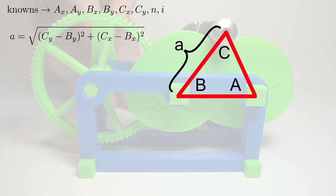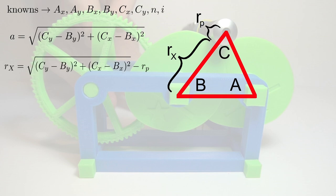But we're not really trying to find a, what we're really trying to find is the radius of the cam, which is just a minus the radius of the laser pin.